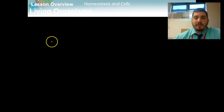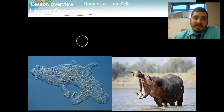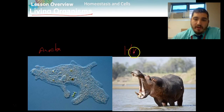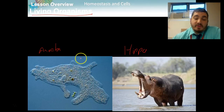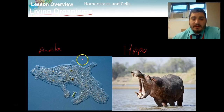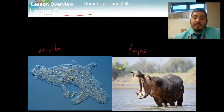Starting off, we're going to talk about homeostasis and cells, and to do that we need to talk about living organisms. We have two living organisms here: an amoeba and a hippo. If you don't know what an amoeba is, it's a one-celled organism that eats little things, moves around, and it's one cell. And if we think back to the beginning of the year, we've talked about this — while these two organisms are completely different, this amoeba versus this hippo, they both share all the characteristics of life because they're both living things.